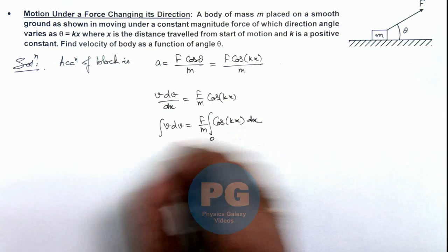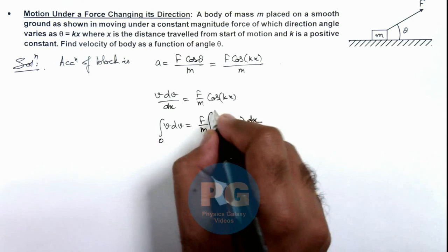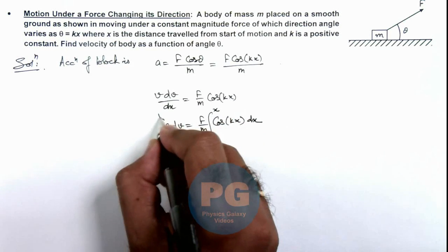We can see at x equal to zero the speed was zero, and at a displacement x the speed changes to v.